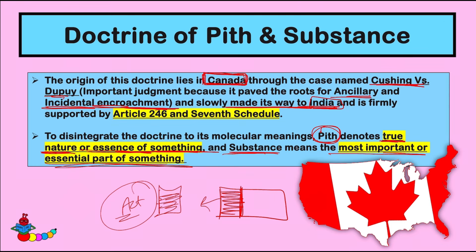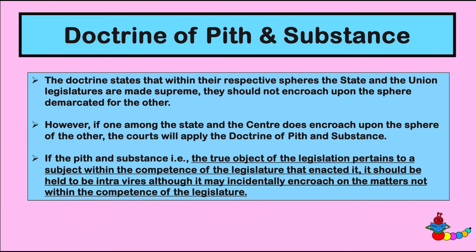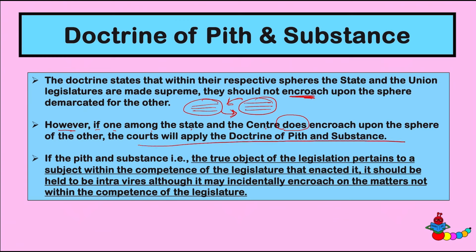Pith and Substance — पूरे act में समझते हैं कि main essence क्या है इस act का, plus इसका essential part क्या है। The doctrine states that within their respective spheres, the State and Union legislatures are made supreme — they should not encroach upon the sphere demarcated for the other। State या Center का already subject matters mentioned कर दिया गया है कि किस-किस पे law बना सकते हैं, तो एक को दूसरे के subject matters पे encroach नहीं करना चाहिए। However, if one among the State and the Center does encroach upon the sphere of the other, the court will apply the Doctrine of Pith and Substance।